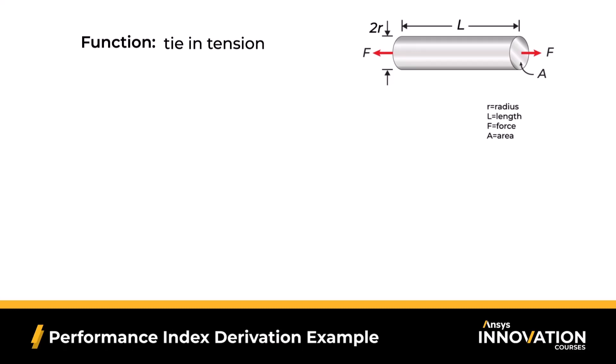The objective? We're trying to minimize our mass. We can calculate the mass of our cylinder, aka rope, with this equation, where our mass is m, area is A, length is L, and rho is density.